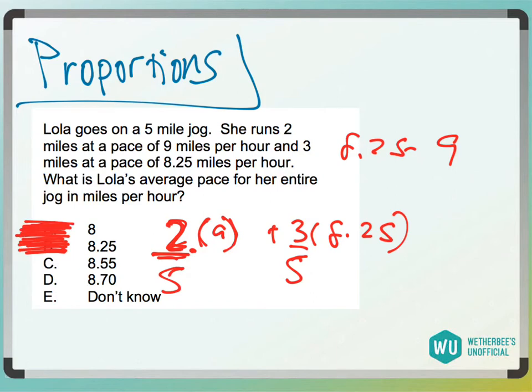So it's definitely not going to be lower. It's not going to be 8.25 because she's going more than half of it at 9 miles per hour. So you could at least narrow it down to that.